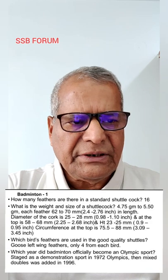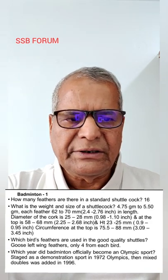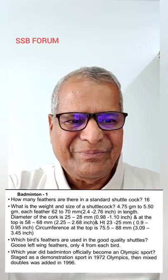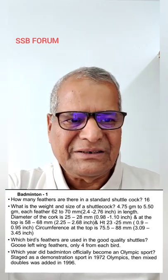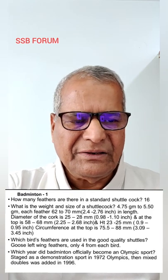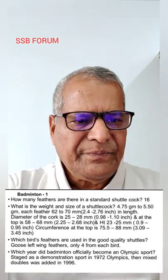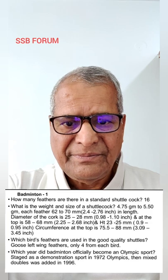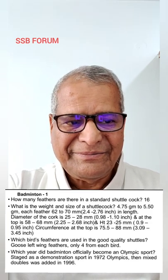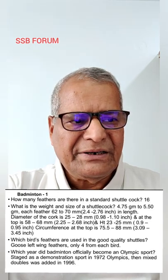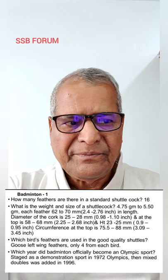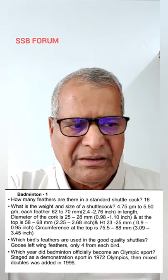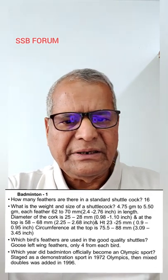Which bird's feathers are used in good quality shuttles? For tournaments, real bird feathers are used — not plastic. The answer is goose, specifically left wing feathers, and only 4 feathers from each bird. Which year did badminton officially become an Olympic sport? It was staged as a demonstration sport in the 1972 Olympics, and mixed doubles was added in 1996.